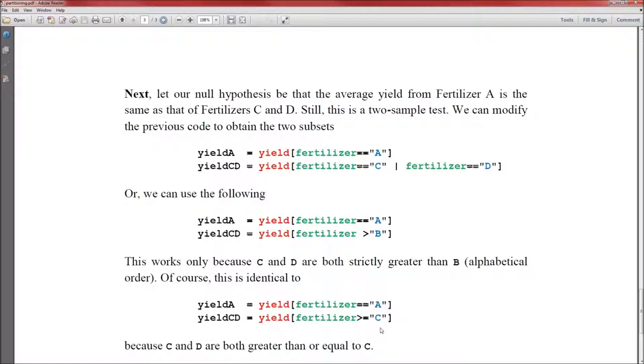Now the drawback to these last two is that it's not clear just from how they're written that they will hold just the yields for fertilizer C and D. Because if there was a fertilizer E, which there may have been in this data, if there were fertilizer E, then this would be the yield for fertilizer C, D, and E. Only in this example are we explicit that yieldCD is going to hold the yield for fertilizer C and D.